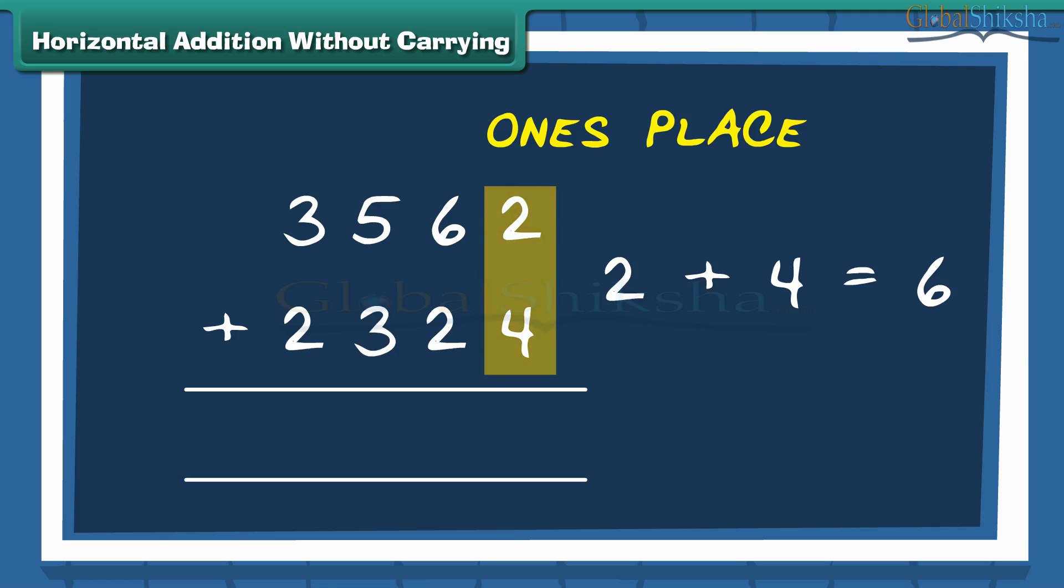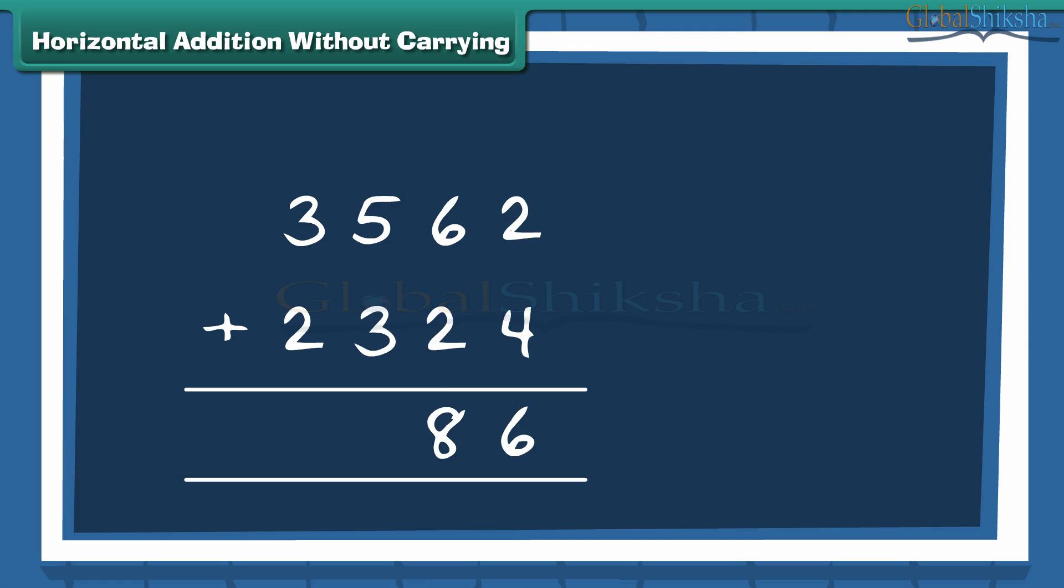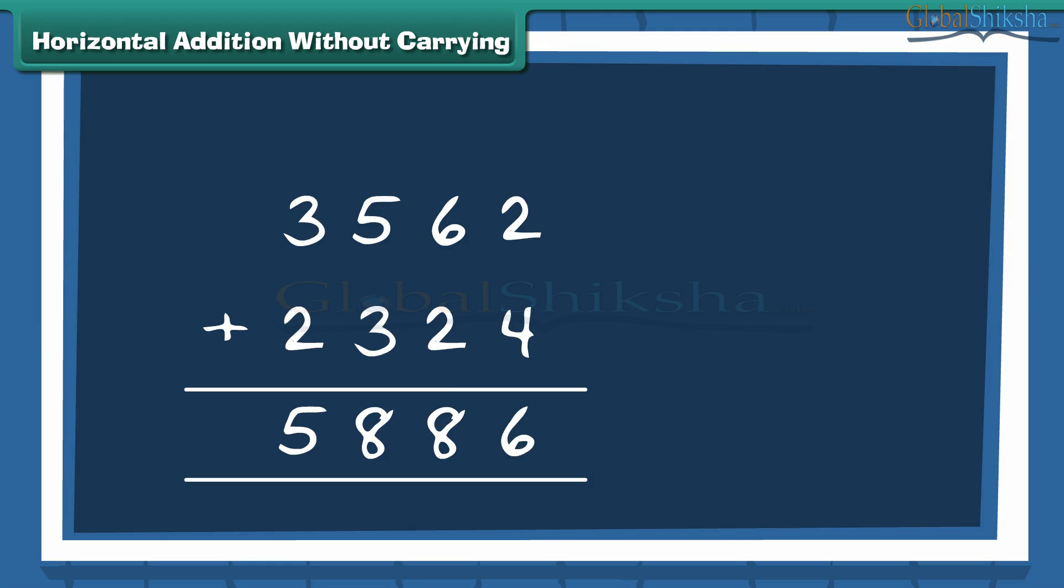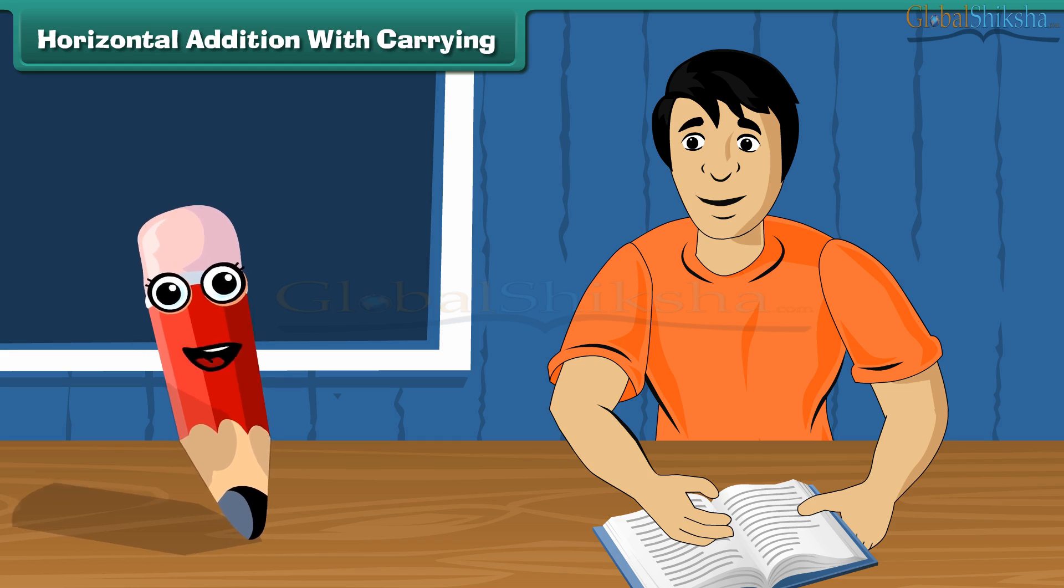We have the 2 numbers, 3562 and 2324, which are written horizontally. Now we first add numbers at 1's place. Next we move to numbers at 10's place. Then add the numbers at 100's place. And finally, the numbers at 1000's place are added.